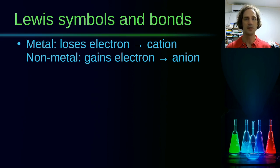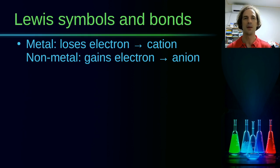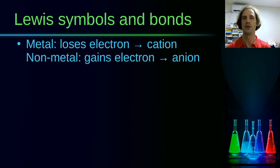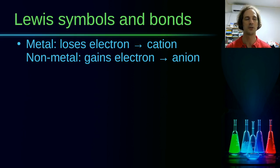Based on Lewis's theory, this happens because these atoms want to reach a stable structure with 8 electrons in their valence shell. A metal atom has few valence electrons, which it can lose to become a positively charged ion, while a non-metal has many valence electrons, so gaining just 1, 2, or 3 more electrons gives it a full 8-electron shell.